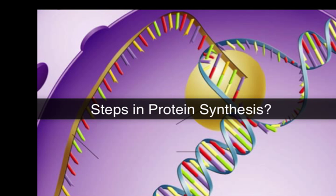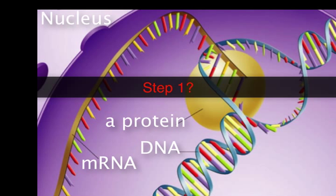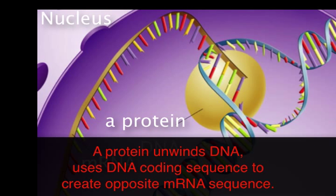Let's deduce the steps in making the protein. In step one, we see double-stranded DNA, a small yellow protein, and an mRNA. The yellow protein is opening and separating the DNA strands, reading the coding strand of the DNA, and creating the mRNA sequence that is complementary to that DNA sequence. If the first base in the DNA gene is T, then the first letter in mRNA is going to be A.